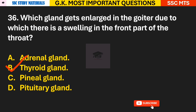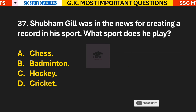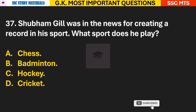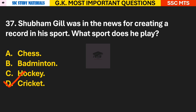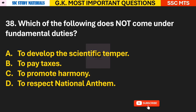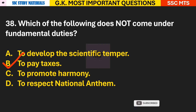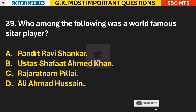Question 37: Shubman Gill was in the news for creating a record in his sport. What sport does he play? Answer D — Shubman Gill is a cricketer. Question 38: Which of the following does not come under fundamental duties? Answer B — to pay taxes; it does not come under fundamental duties. Question 39: Who among the following was a world-famous sitar player? Answer A — Pandit Ravi Shankar.